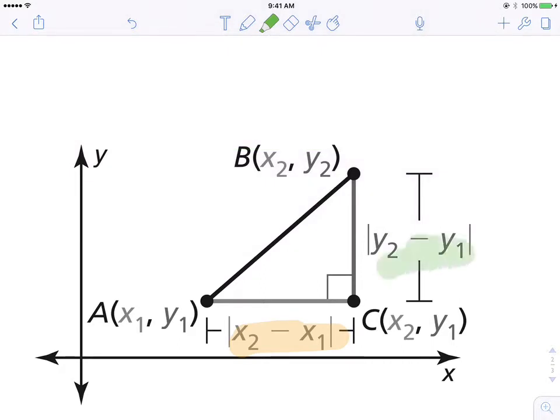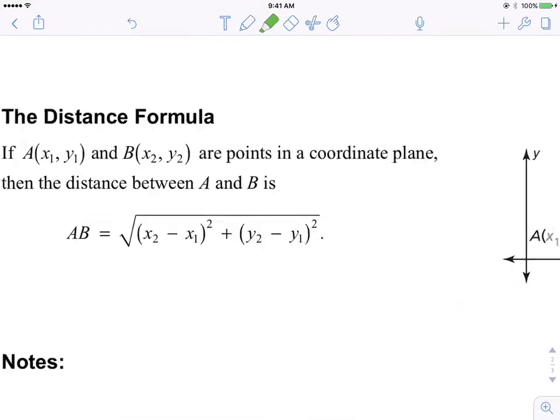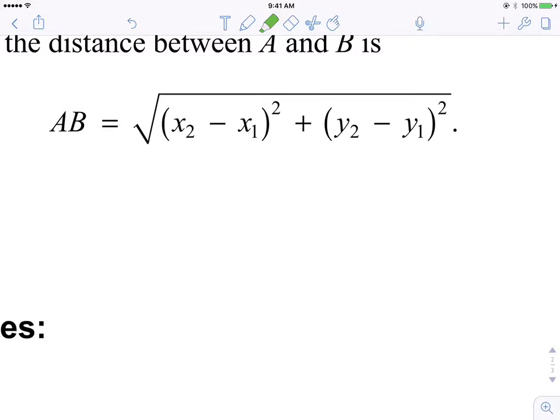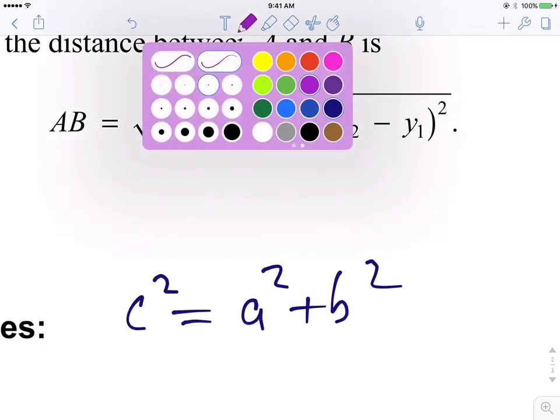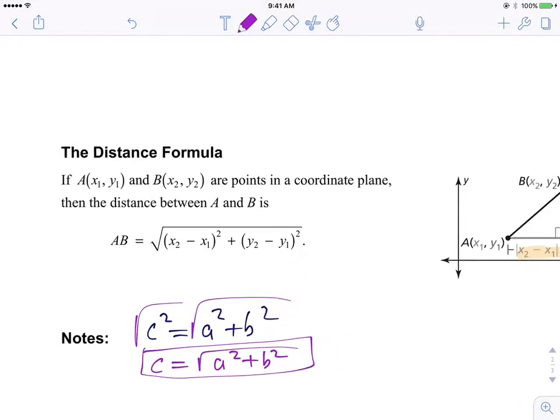And it might make some sense. But if you substitute these values here into the Pythagorean theorem, take these values here, which represent the length, and square them, right? Then it can solve for C. Then you would get this formula. Now, I want to show you something just for case in point. So if I take the square root, then I get C equals the square root of a squared plus b squared. See that? That's the value of C, the length of the hypotenuse.